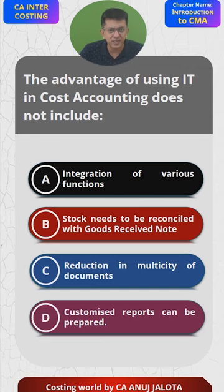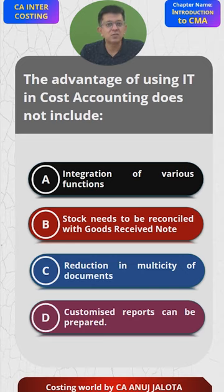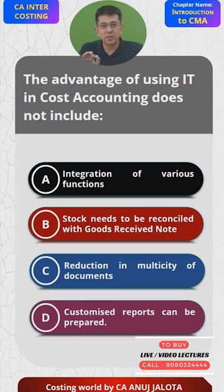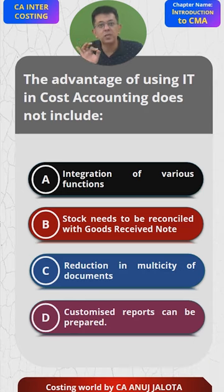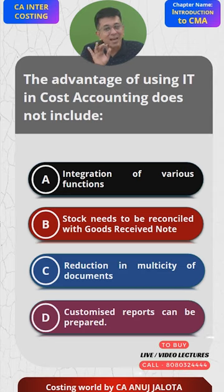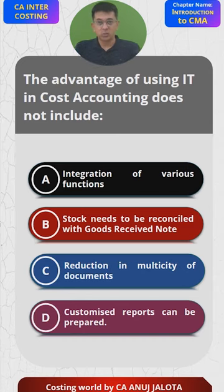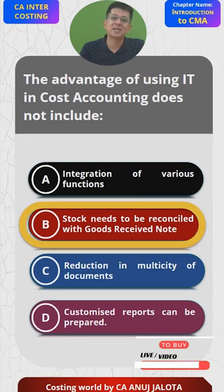Option B: stock needs to be reconciled with the goods received note. Once we physically get delivery of goods from the supplier, the GR department physically counts how many units were received. This physical counting cannot be computerized - sometimes you also have to check the quality of goods, which IT cannot take over, at least for a few years from now. So out of the four options, B is the correct answer - it is NOT an advantage of IT.